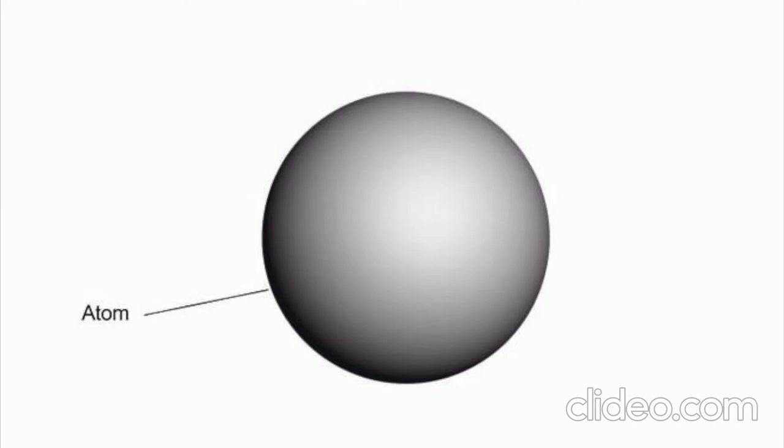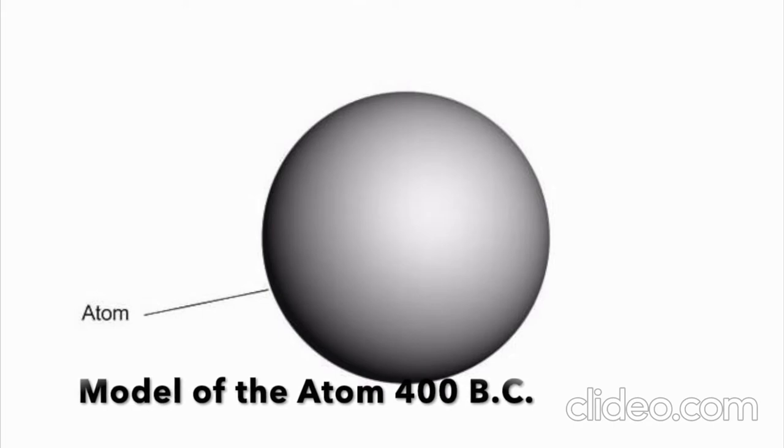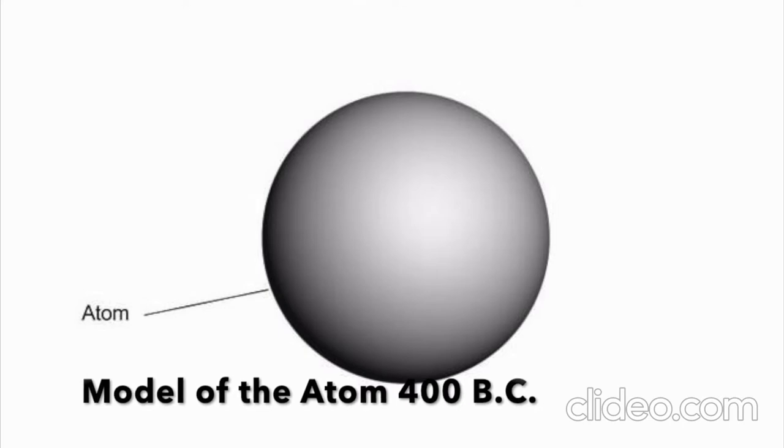His model of the atom looked like this. His model stated that matter consists of invisible particles called atoms and a void. He stated that atoms are indestructible and unchangeable. Also, that they are homogeneous, meaning they have no internal structure.